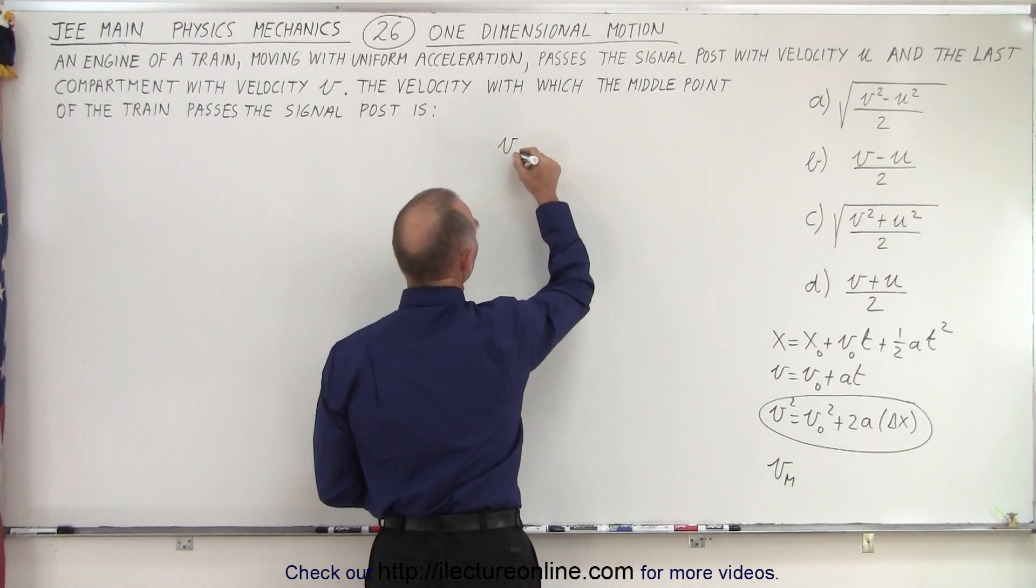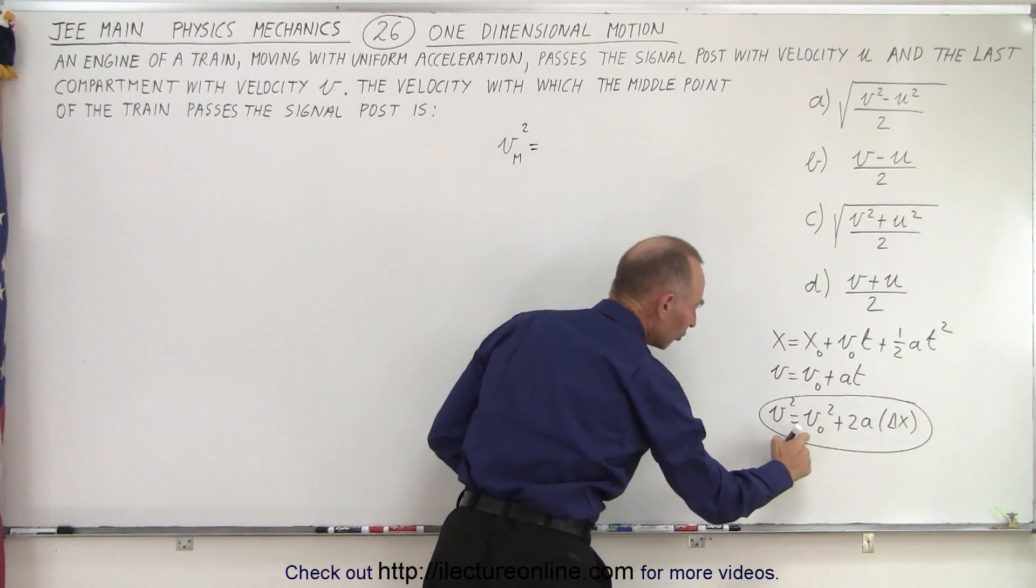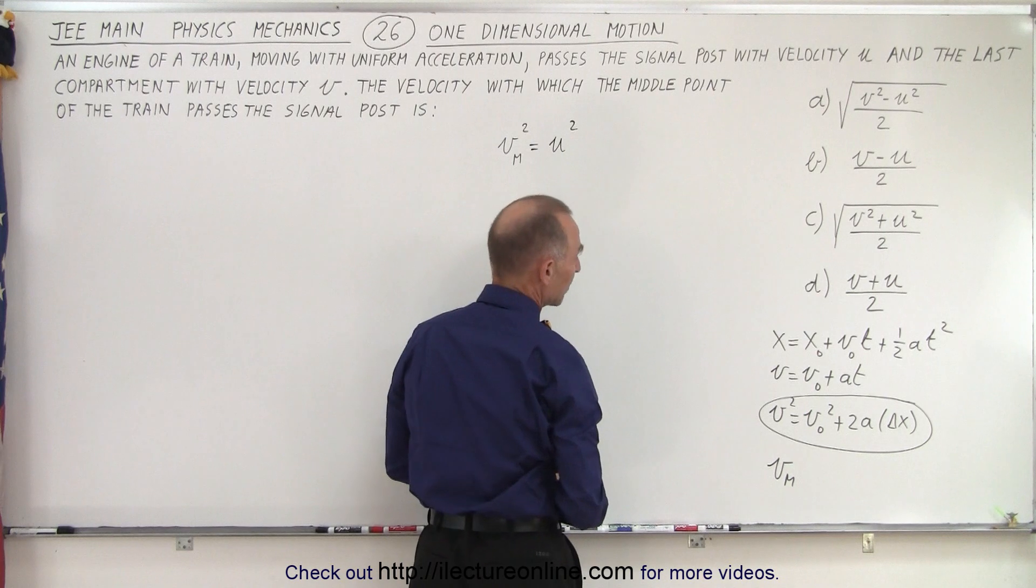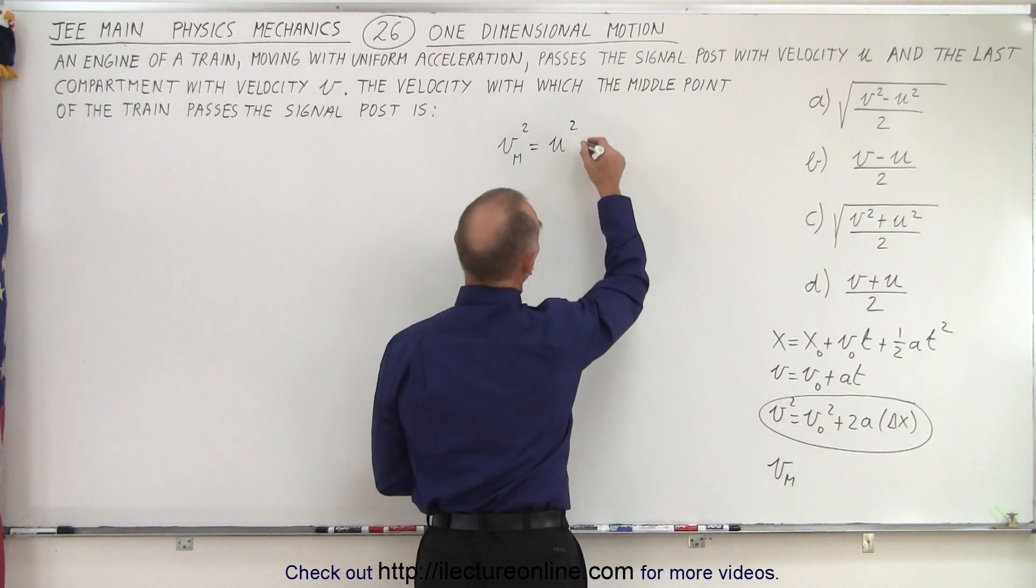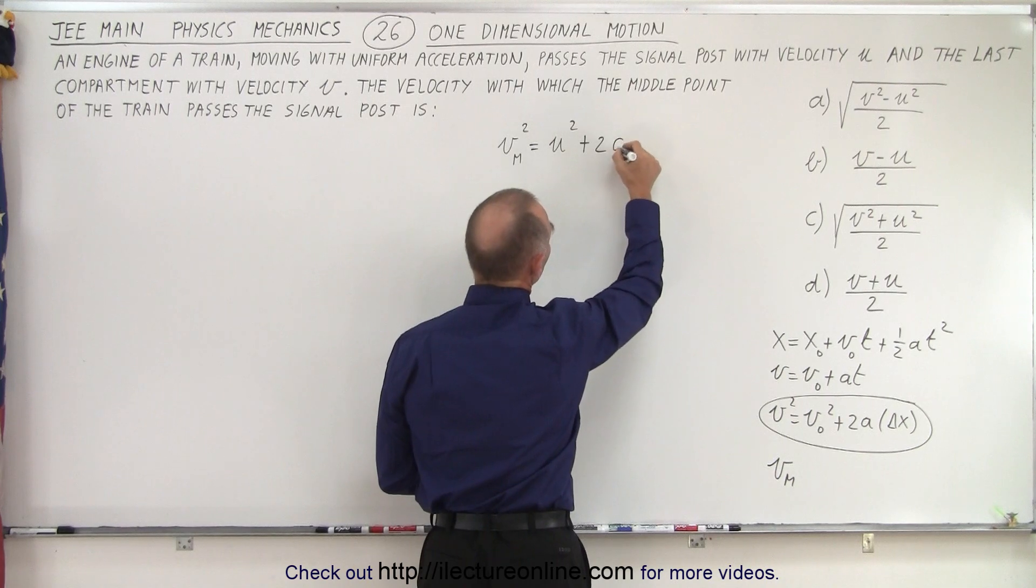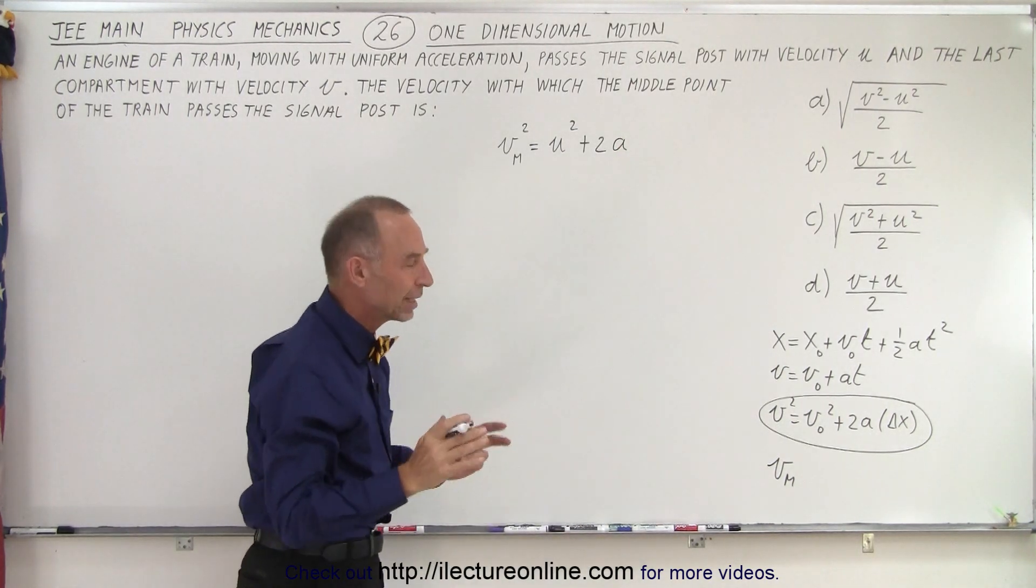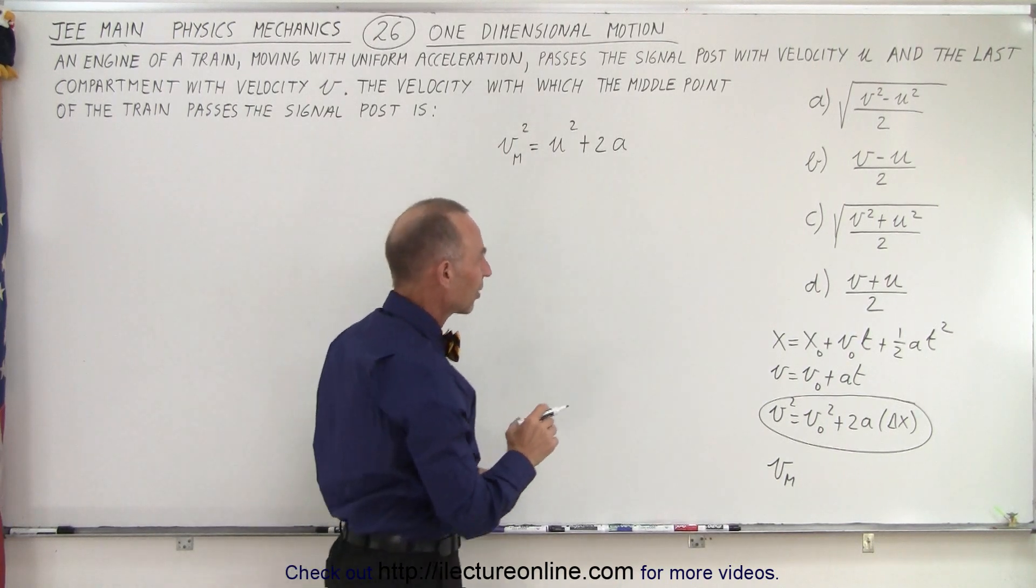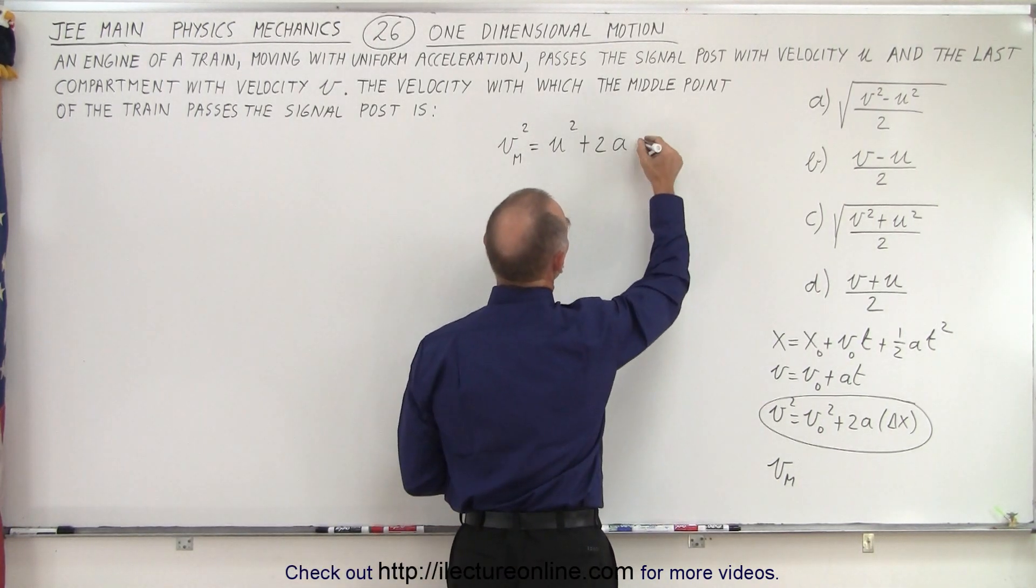So here we can write velocity of the middle of the train squared is equal to the initial velocity squared. We'll start with u, u squared, and plus two times acceleration times the amount of the length of the train that has gone by. The length the train has gone by would be l over two.